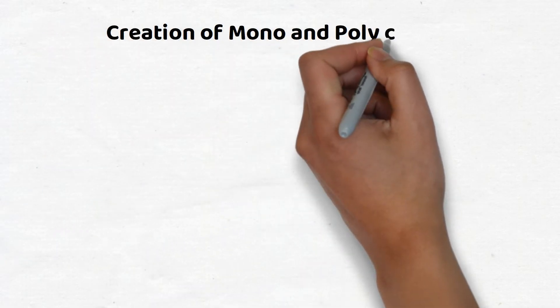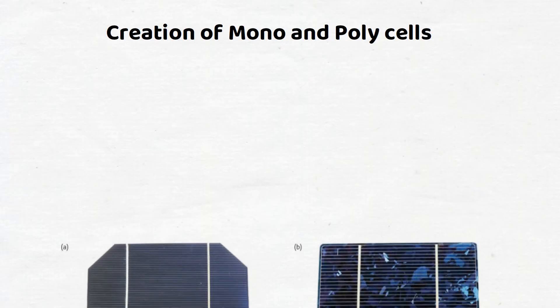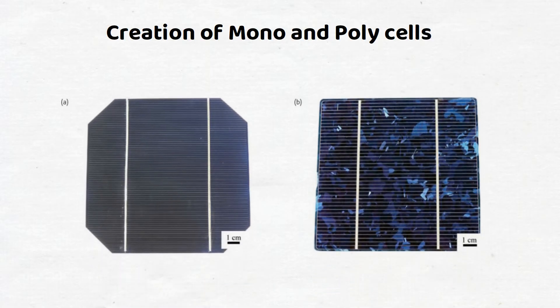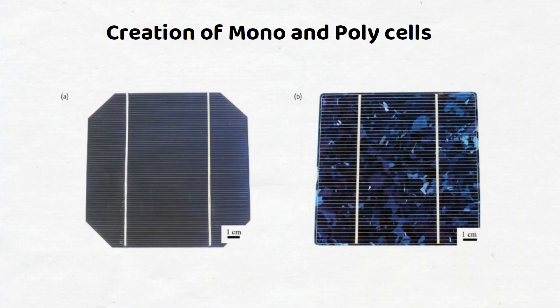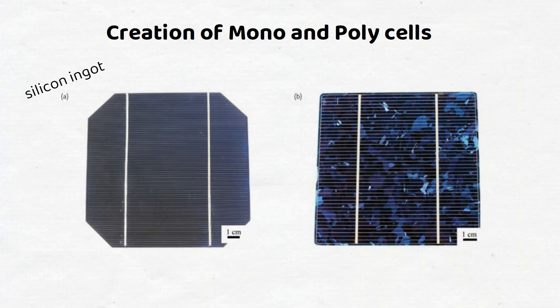Silicon solar panels are made following a complicated process, but depending on the type of module the process changes slightly. For monocrystalline modules, a single silicon crystal seed is dipped into a molten silicon solution made out of silicon rocks at 2500 degrees Fahrenheit. The cylindrical structure that comes out from the solution is called a silicon ingot, which is then sliced and used to manufacture the wafers of the solar cells.